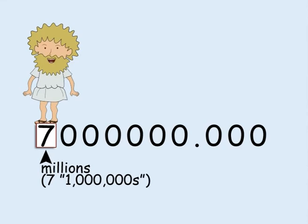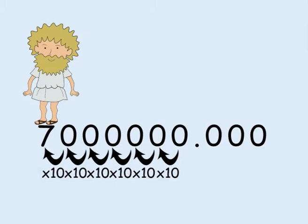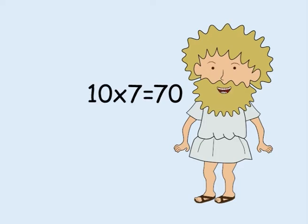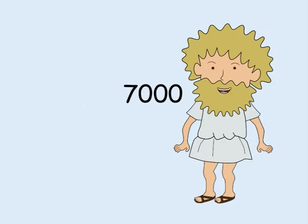We could carry on, but the important thing to realise is that each time you move to the left, the size increases by a factor or power of ten. If you have a number and move it a place to the left, this means it gets ten times bigger. So seventy is ten times bigger than seven. Seven hundred is ten times bigger than seventy. And seven thousand is ten times bigger than seven hundred.